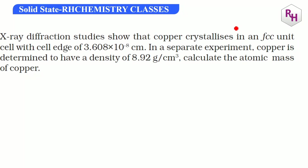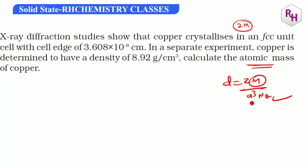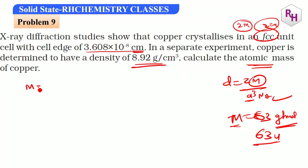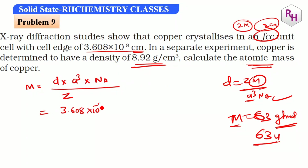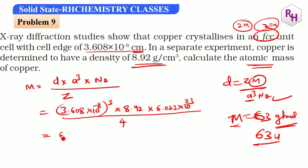Now calculate atomic mass: rearrange density formula to M = (d × a³ × NA) / Z. FCC so Z = 4. Substituting: density = 8.92 g/cm³, a = 3.608 × 10⁻⁸ cm, NA = 6.023 × 10²³. Solving gives M = 63.1 g/mol. This is the atomic mass of copper.